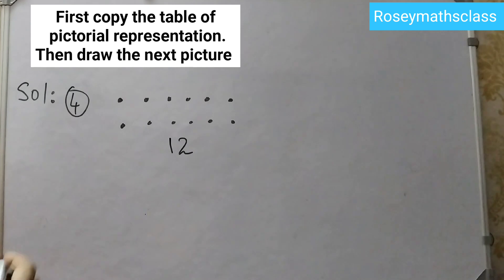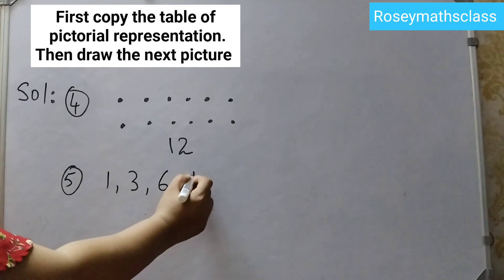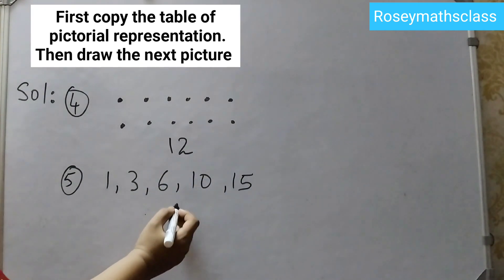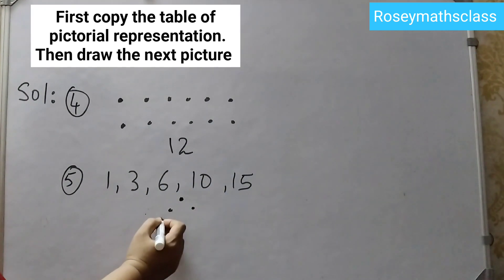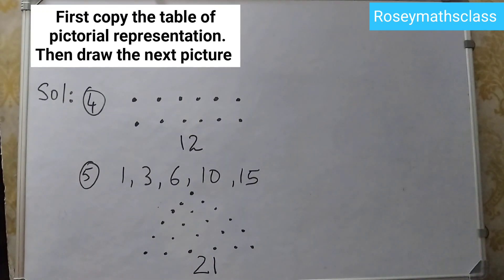Next we have triangular numbers. Triangular numbers are like 1, 3, 6, 10, 15. It is given till 15 in your textbook, you need to draw the next one. So first let's draw 15 dots: 1, 2, 3, 4, 5, 6, 7, 8, 9, 10, 11, 12, 13, 14, 15. So the next picture will be 16, 17, 18, 19, 20, 21. So that's 21, this is the answer for the 5th one.